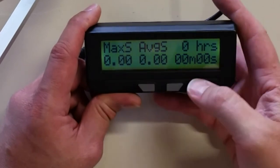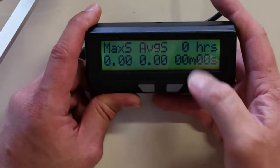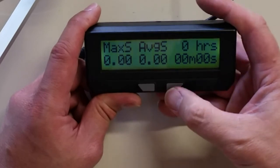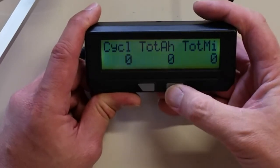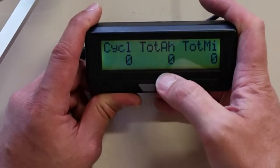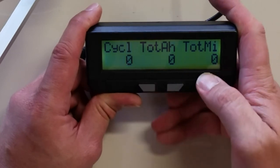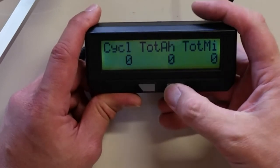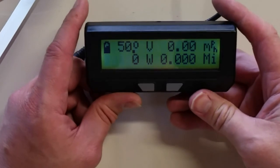Max speed, average speed, and then total hours of riding. Hours, minutes, and seconds. Battery cycles, total amp hours, and total miles. This is your essentially your odometer settings. And back to the start screen.